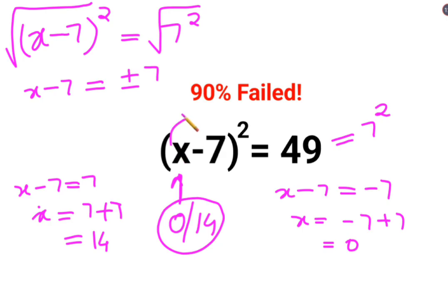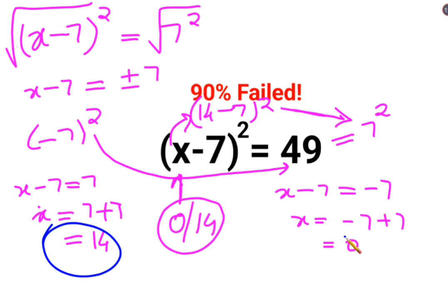Let's put over here. If I put 14, so 14 minus 7 the whole square also gets me 7 square. And 0 minus 7 the whole square gets me minus 7 the whole square, whose answer also comes out to be 49. So here I can say that the value of x is either 14 or 0.